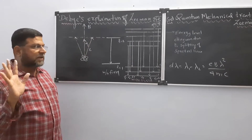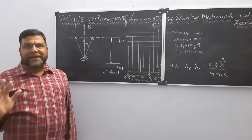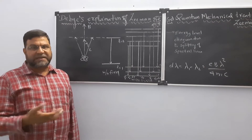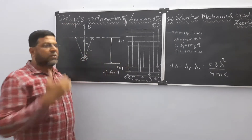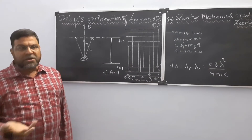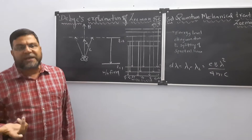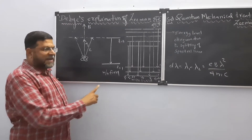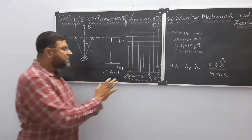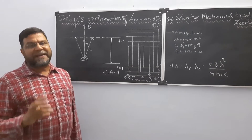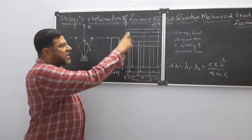B is the strength of the applied magnetic field. When an electron moves from ground state to excited state it absorbs energy — that is the absorption process. When it jumps from higher to lower energy level it emits energy — that is emission. Now we look at the energy level diagram with and without the magnetic field. The first diagram shows energy levels without the field, and the second shows that when the magnetic field is applied, the spectral lines split.